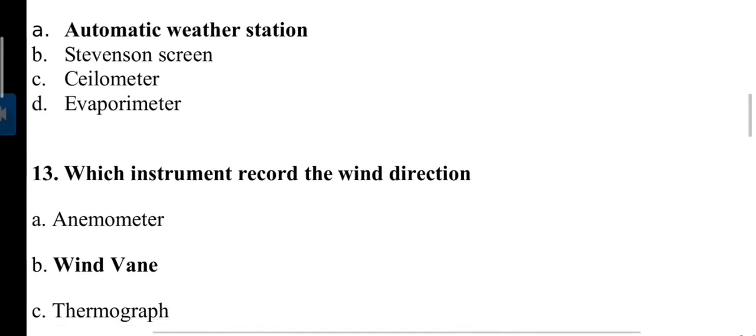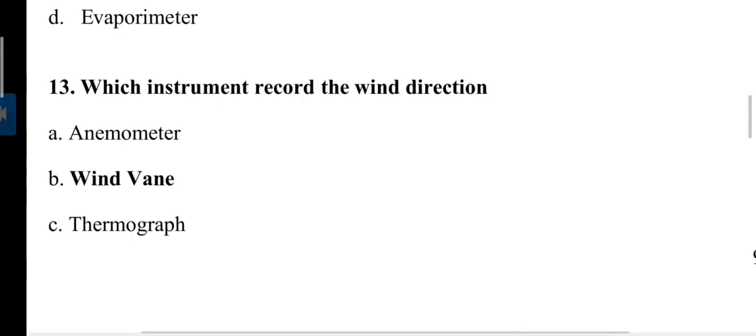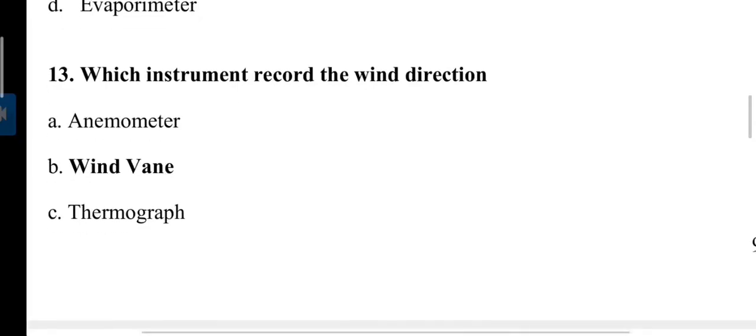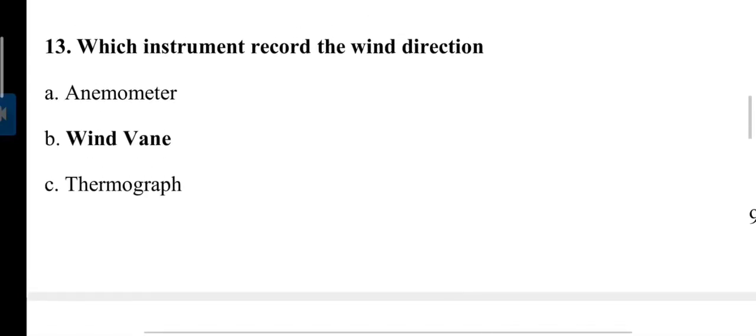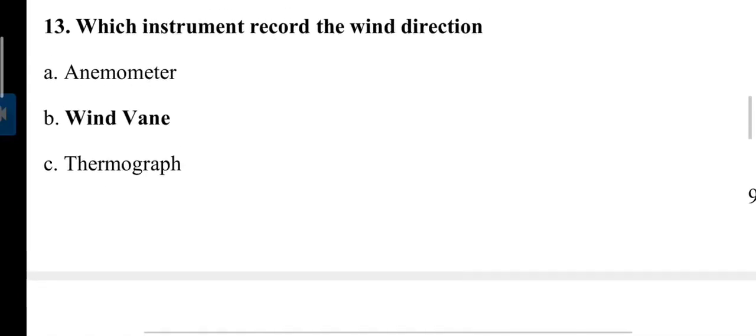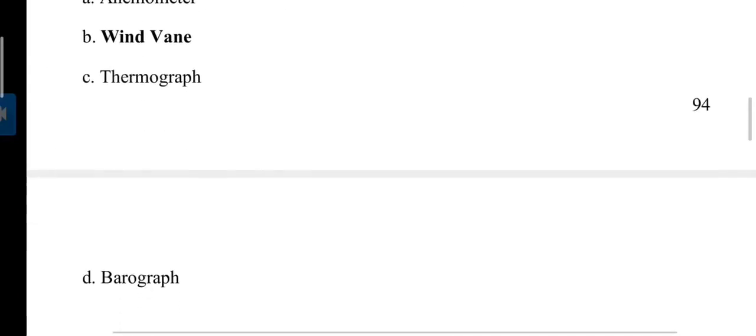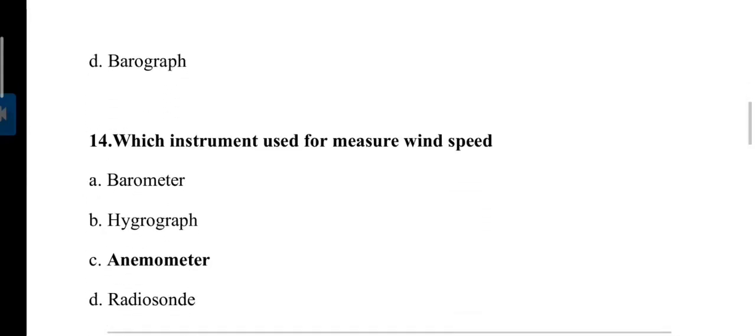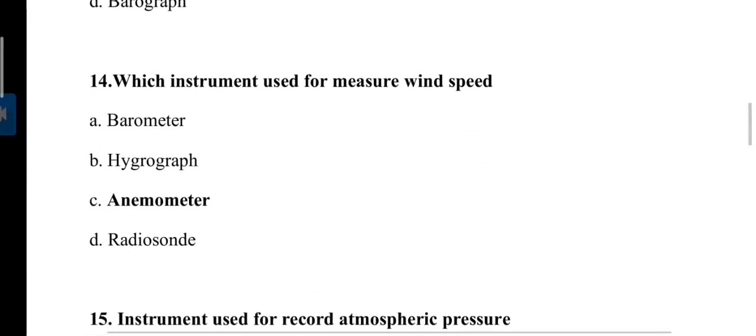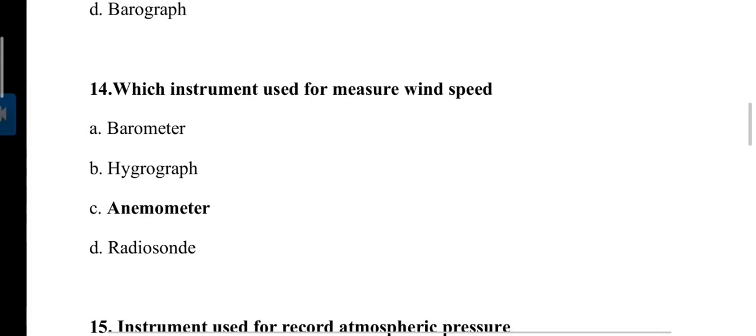Which instrument records the wind direction? The instrument is wind vane, while anemometer measures wind speed. Next question: Which instrument is used to measure wind speed? As we previously discussed, the instrument is anemometer.